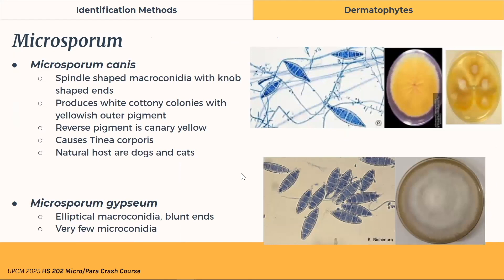Now let's move on to Microsporum. There are two species. Microsporum canis has spindle-shaped, croissant-like macroconidia with knob-shaped ends. Its colonies are white with a yellowish pigment, and the reverse pigment is canary yellow. It causes tinea corporis and the natural hosts are dogs and cats. Microsporum gypseum has blunter ends on its macroconidia and very few microconidia compared to Microsporum canis. On agar it appears white, as compared to the yellow of Microsporum canis.